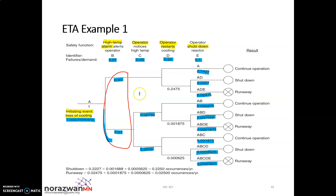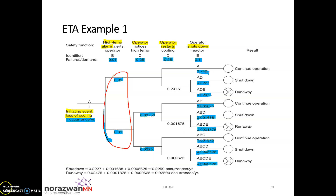In the next video, I will show you how to identify all the consequence events based on the alphabets assigned at the early stage of your event tree analysis.